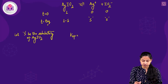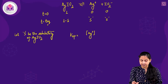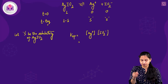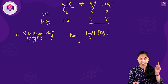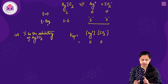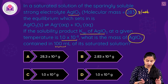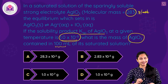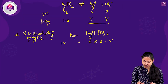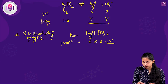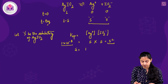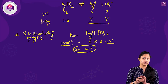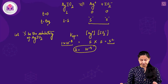The solubility product Ksp equals [Ag⁺][IO₃⁻] = S × S = S². From the question, Ksp = 1×10⁻⁸. So S² = 10⁻⁸, which gives S = 10⁻⁴ mol/L. This is the solubility of AgIO₃ at equilibrium.